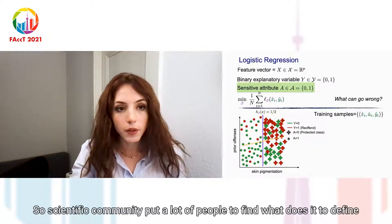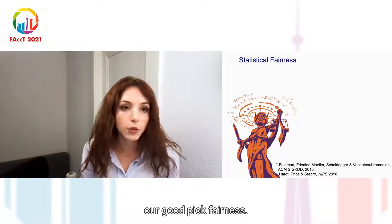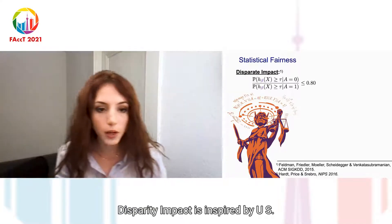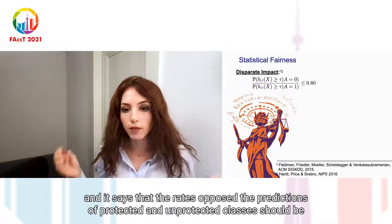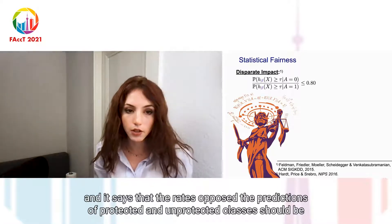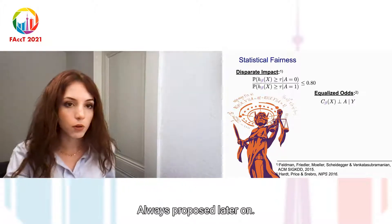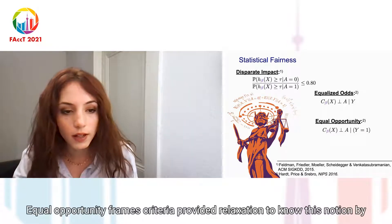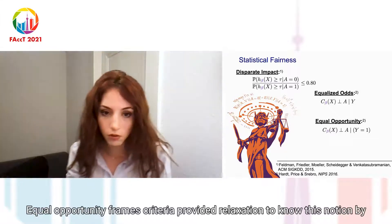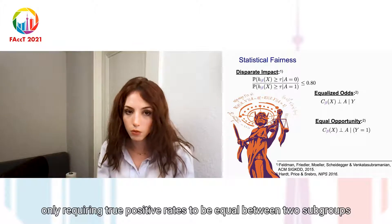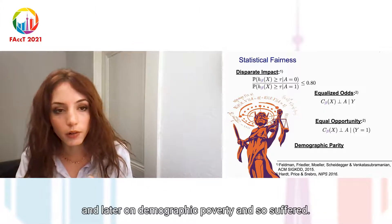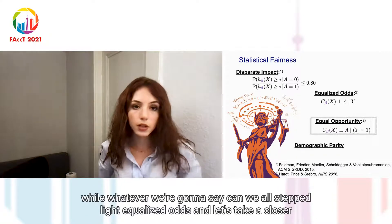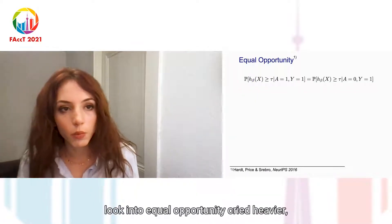The scientific community has put a lot of effort into defining algorithmic fairness. Disparate impact, inspired by the US Equal Employment Opportunity Commission, says that the rates of positive predictions for protected and unprotected classes should be the same. Equalized odds imposes that true positive rates and false negative rates be equal between two subgroups. Equal opportunity provides a relaxation by only requiring true positive rates to be equal between two subgroups. And later on, demographic parity and so on. In this paper, we focus on equal opportunity, though what we present can also be applied to equalized odds.